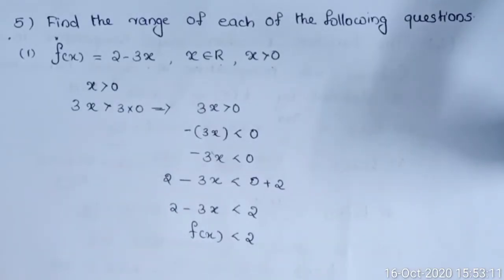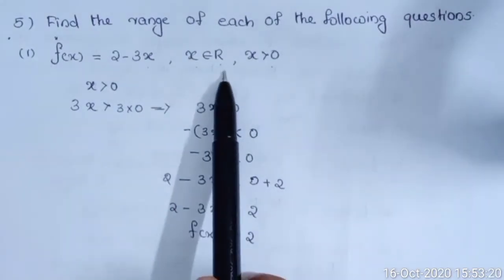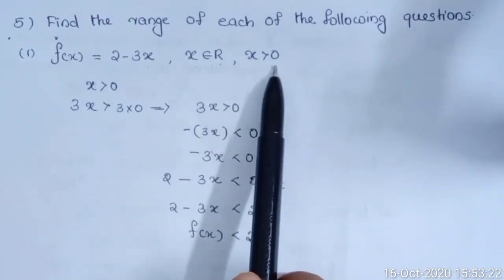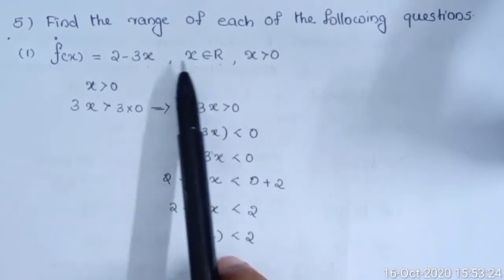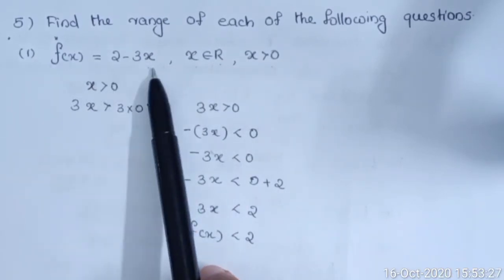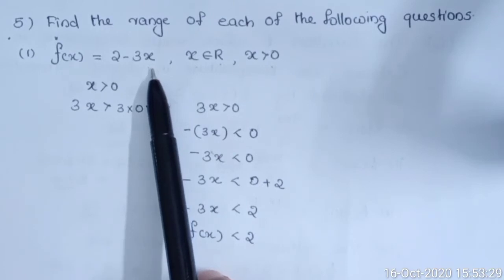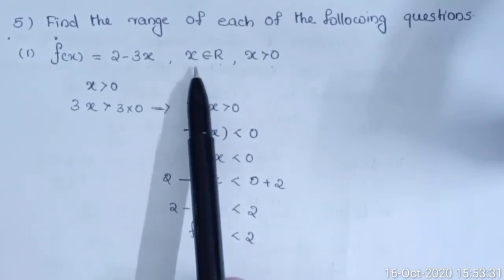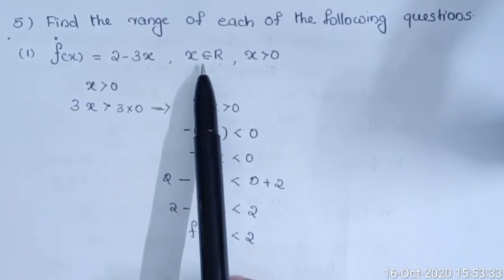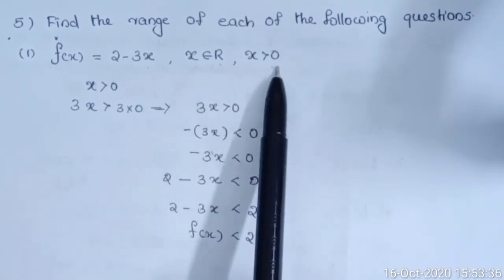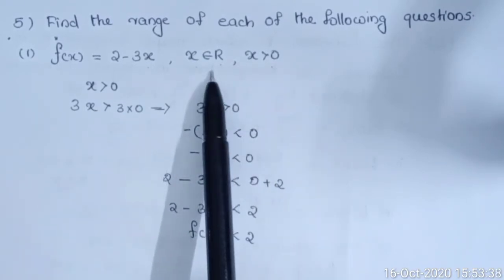Question number 5: find the range of each of the following functions. First: f(x) = 2 − 3x, where x ∈ R and x > 0. Here the domain is x > 0, meaning x is a positive real number.